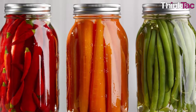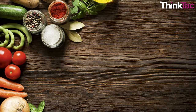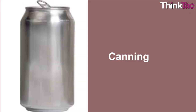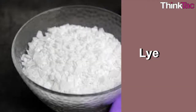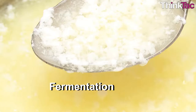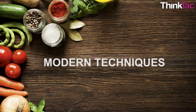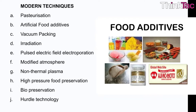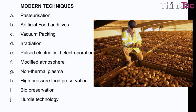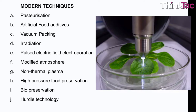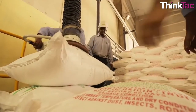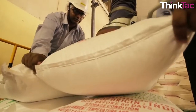The methods of food preservation can be classified as follows. Traditional methods include curing, cooling, freezing, boiling or heating, canning, sugaring, pickling, lye, jellying, jugging, burial and fermentation. Modern techniques include pasteurization, artificial food additives, vacuum packing, irradiation, pulse electric field electroporation, modified atmosphere, non-thermal plasma, high pressure food preservation, biopreservation and hurdle technology. We have listed most of the techniques but will discuss the ones that are commonly used.